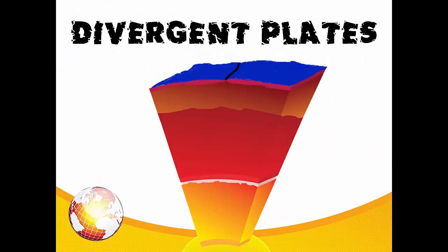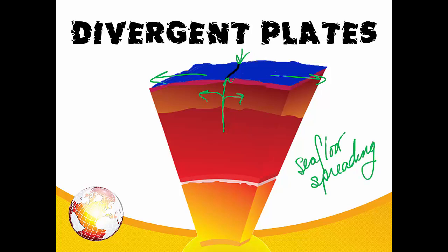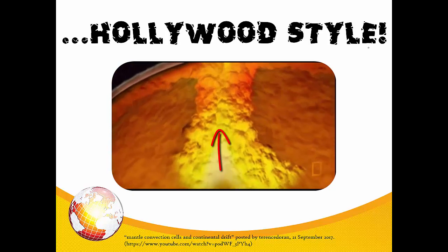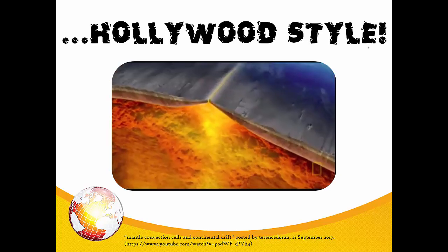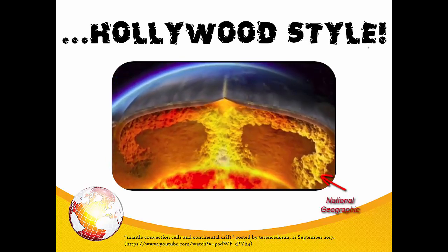It gets interesting for us when a convection current's peak is in line with an underwater location where two tectonic plates meet. When the mantle turns in either direction under the Earth's crust, the current actually pulls the two plates apart, creating a crack in the Earth's crust. Magma that is riding these currents rises up to fill the gap left between the plates. That magma is cooled right away by the water, and that creates new sea floor. The process at divergent plates is called seafloor spreading. Geographers call the lines where these two plates meet a mid-oceanic ridge. Here you can see the mantle convection pulling apart the two plates, allowing magma to come up and form new sea floor.